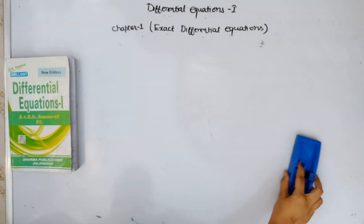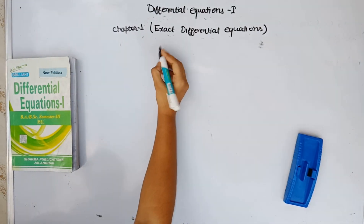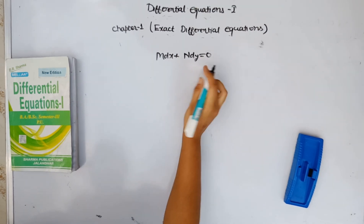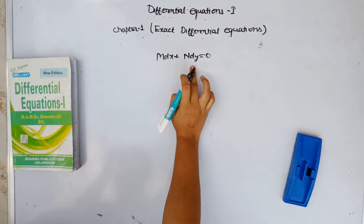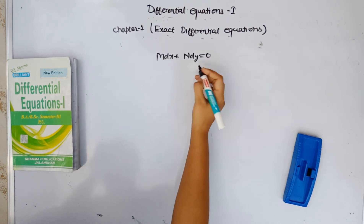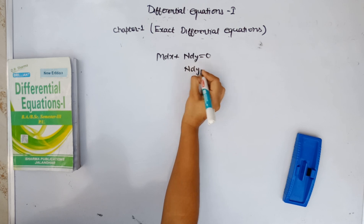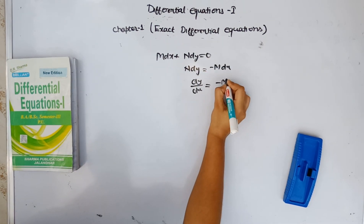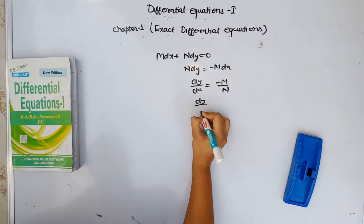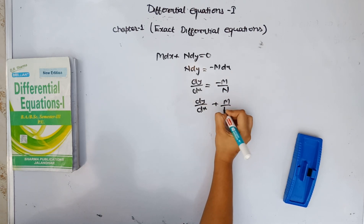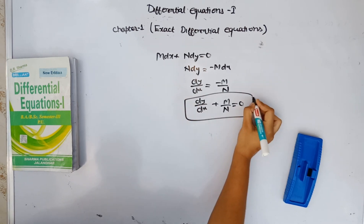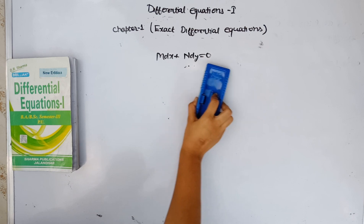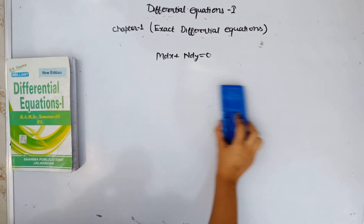Now, what is the exact differential equation? M dx plus N dy equal to 0 — this is the form of an exact differential equation. You can rewrite it as: dy/dx plus N over M equals 0. This means the equation is a differential equation, and I am saying that this equation is exact.